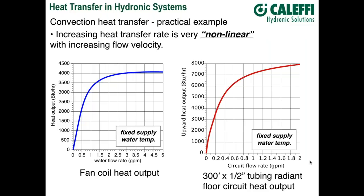A 300-foot circuit of half-inch PEX tubing in a slab — holding the water temperature at a fixed value and varying the flow rate — shows a rapid increase in heat transfer at low flow rates, then diminishing returns at higher flow rates. These are the reasons behind things like equal-percentage balancing valves: the idea of creating a valve so we get an approximately linear relationship between heat output and flow rate. You can't do that with a standard globe or ball valve — you need a characterized valve with an equal-percentage characteristic.